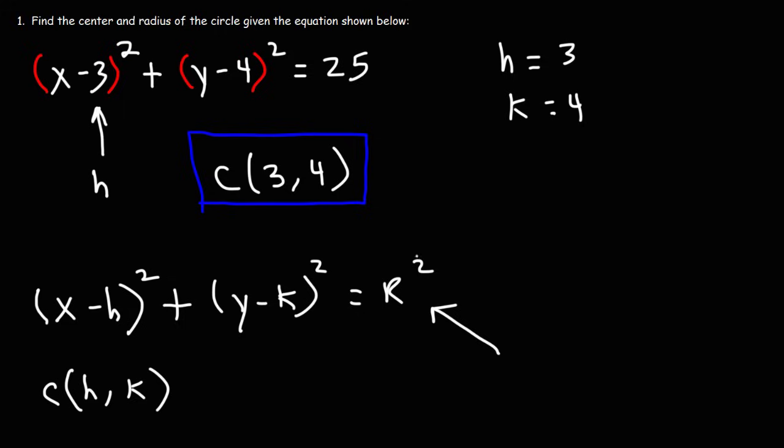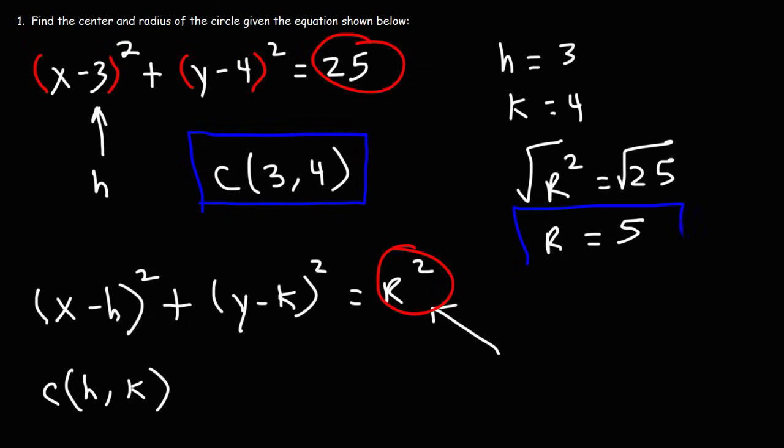Now, to determine the radius, we need to focus on this number. Remember, this is the same as r². So if r² is equal to 25, what is the value of r? Taking the square root of both sides, we can get the answer. The square root of 25 is 5. So that is the radius of the circle.